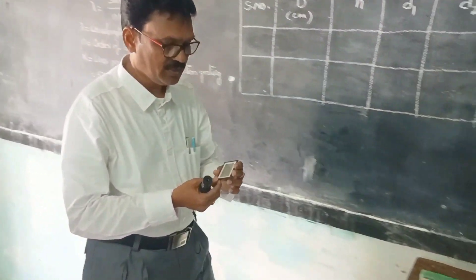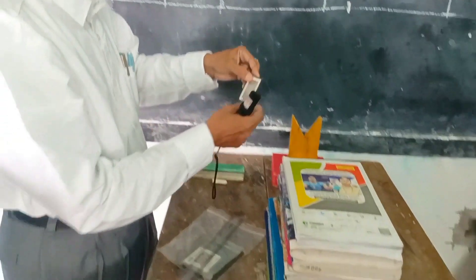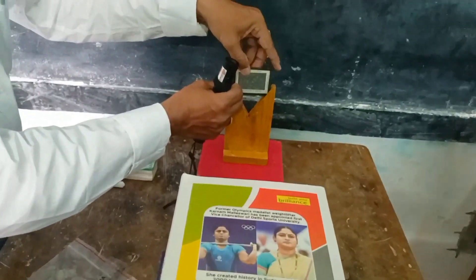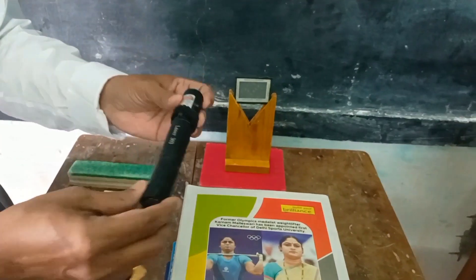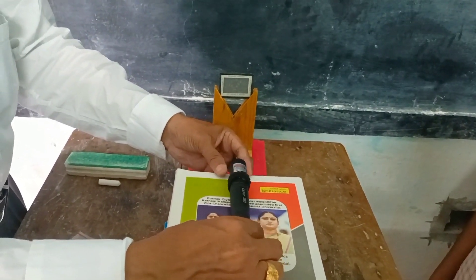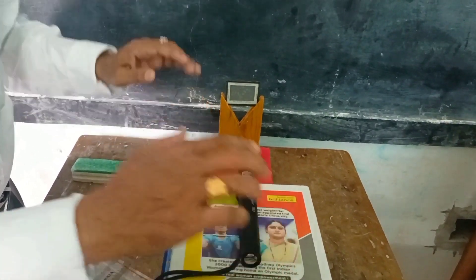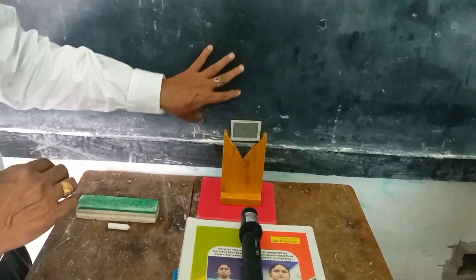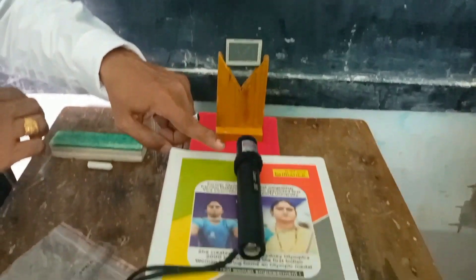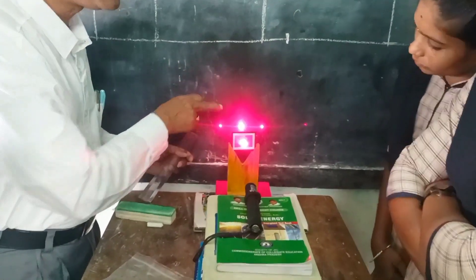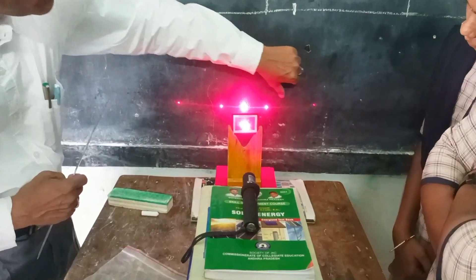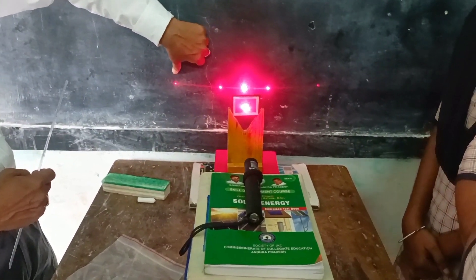Now I am placing this grating in the stand. The laser source is placed in exactly a linear position. This board is treated as the screen, this one is our grating, and this one is our laser source. These three are in a straight line position. We can clearly observe the diffraction pattern.